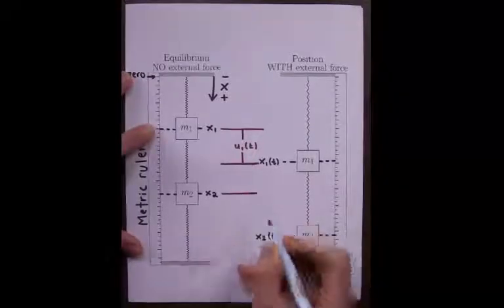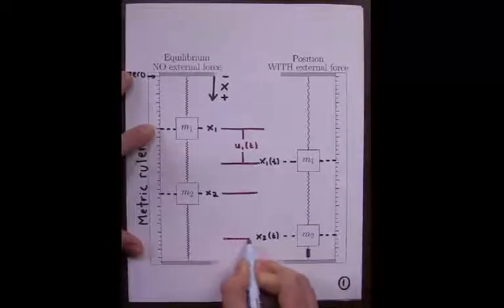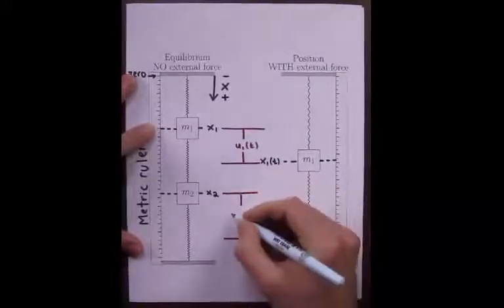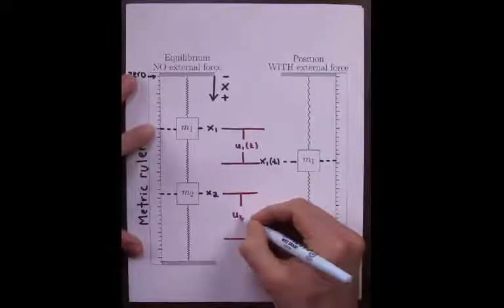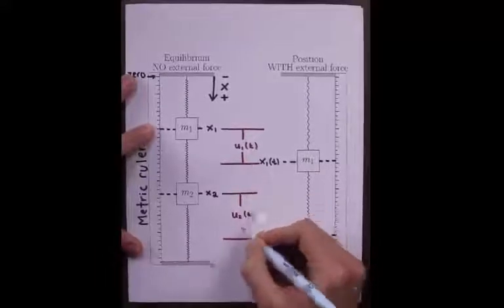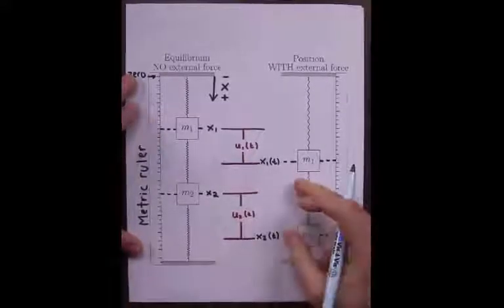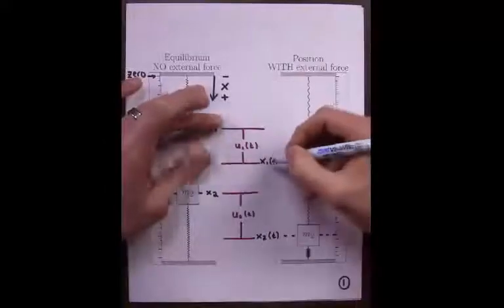and we call the displacement u2 of t. This represents the length between equilibrium and any position.